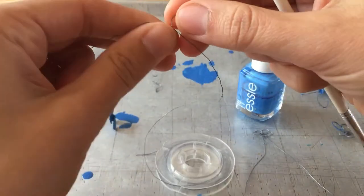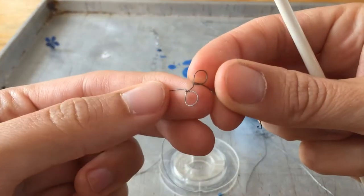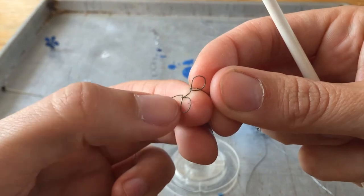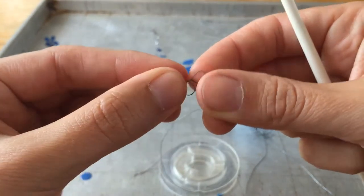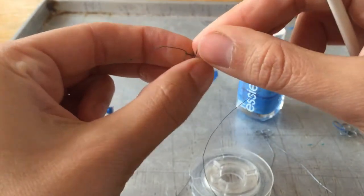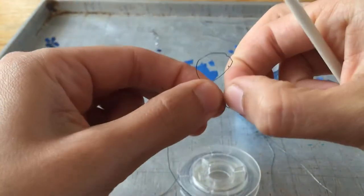Twist it around, and you just want to make sure that the wire is touching as the loop closes up, so that you've just got this ring that the nail polish can grip all the edges of.